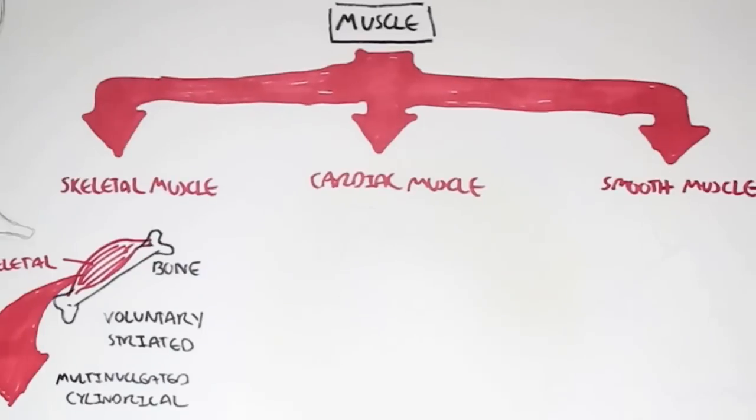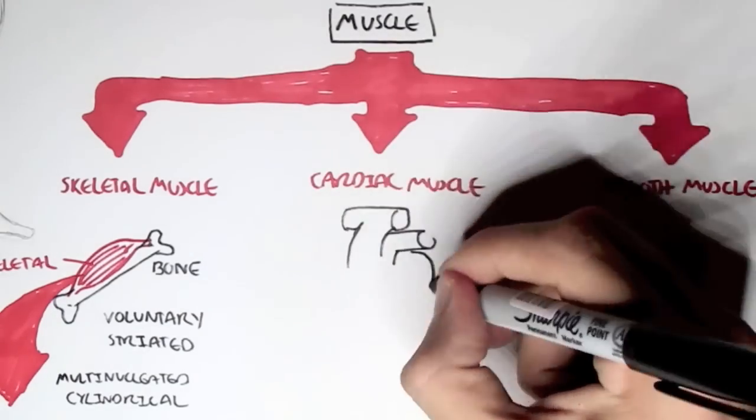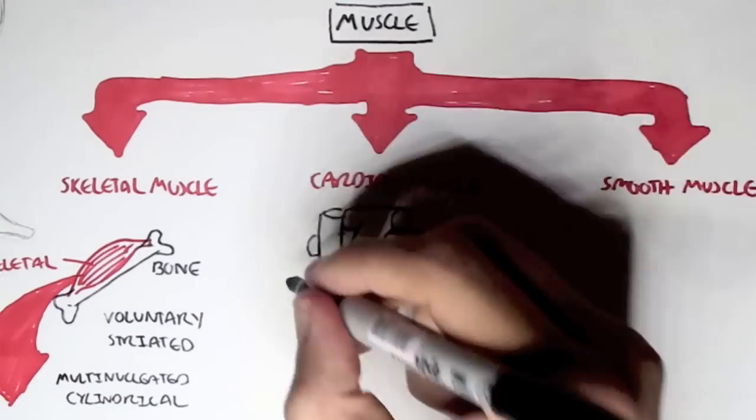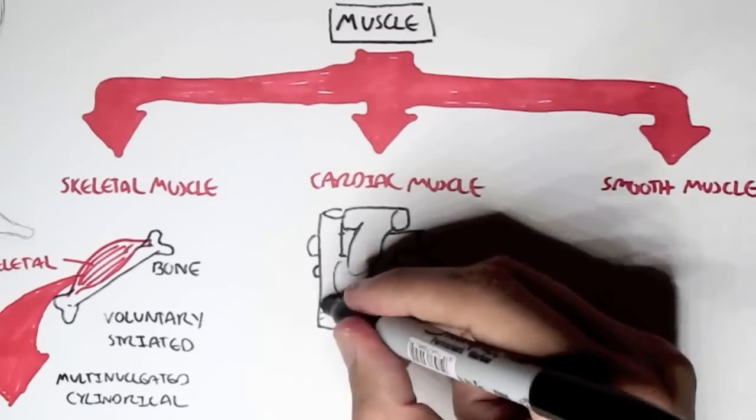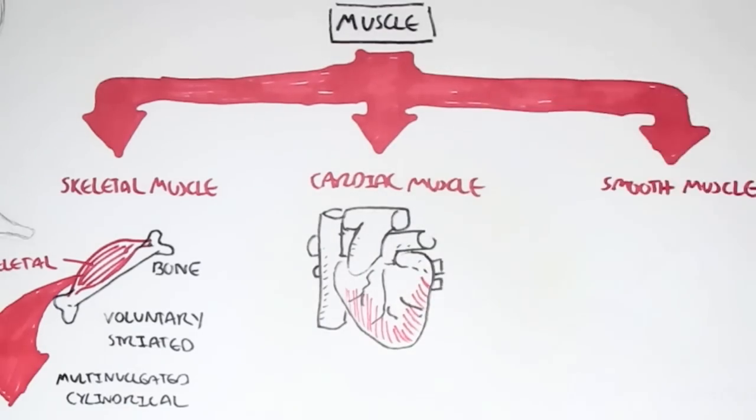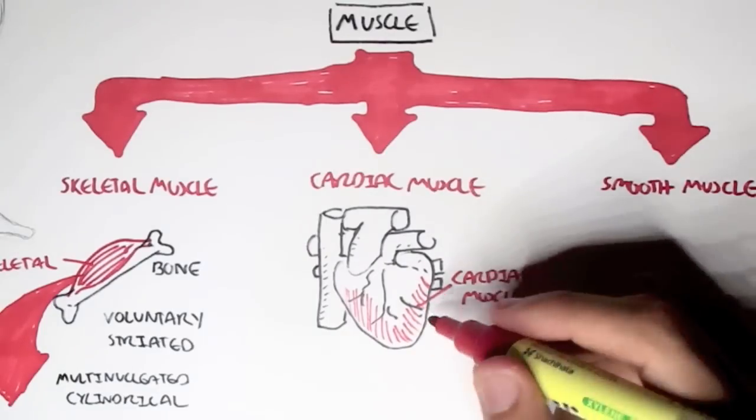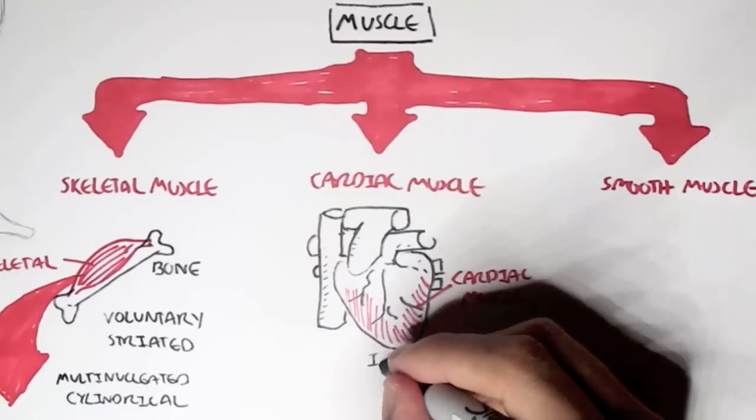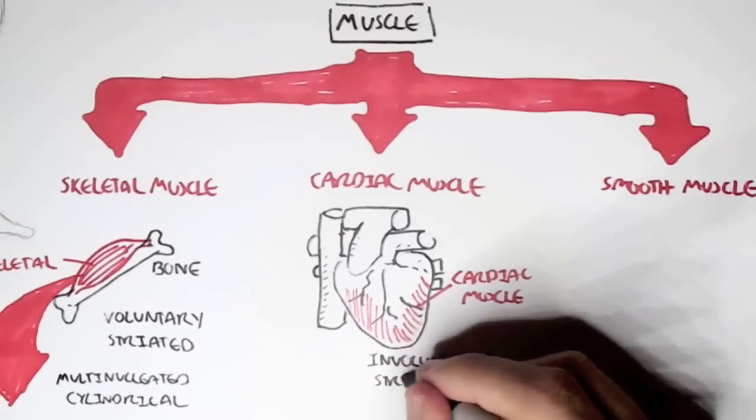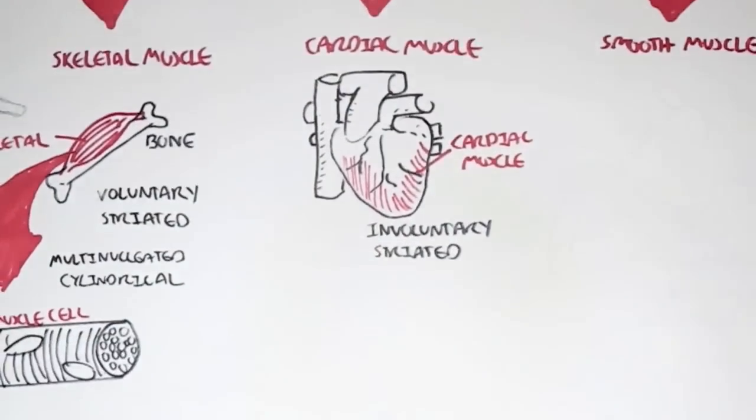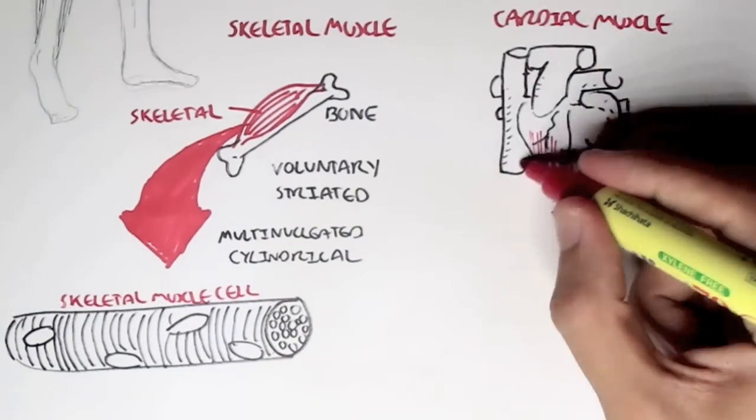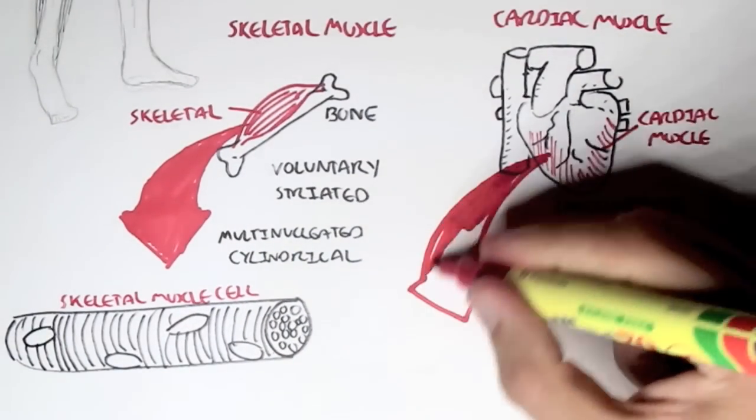The second type of muscle is the cardiac muscle. Cardiac essentially implies the heart, so we're looking at the heart muscles. Cardiac muscles are amazing because they keep contracting until the day we die to pump blood around our body. Cardiac muscles are involuntary, meaning that we have no conscious control over them, and that is why we have no conscious control over our beating heart.